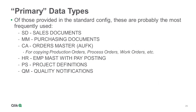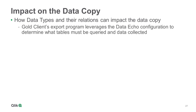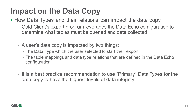Here is a list of the most frequently used primary data types. With respect to the content shared during this presentation, the following details provide some important insight on what this means from a data copy perspective. Gold Client's export program utilizes the DataEcho configuration to determine what tables to query and what data to collect. A user's data copy is impacted by two important items: first, the data type which the user selected to initiate their data export; and second, the various table mappings and data type relations that are defined within the user's DataEcho configuration. Gold Client's best practice recommendation of using primary data types should be followed so that the data copy ideally leads to high levels of data integrity.